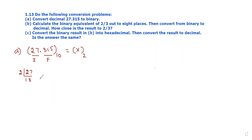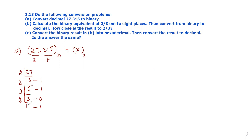Dividing by 2: we get the quotient and remainder at each step. The remainders are noted at each division step. We continue dividing — remainder is 0, then remainder is 1 — and continue the process until the quotient is 0.